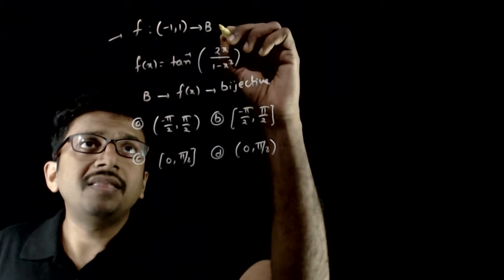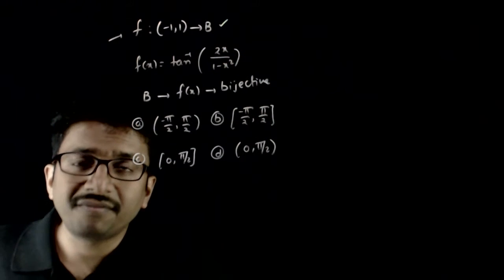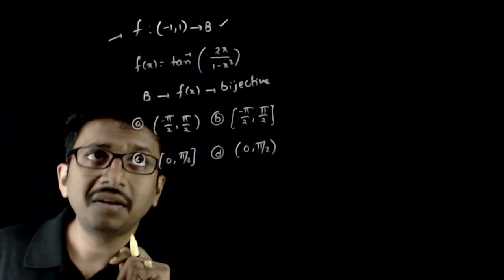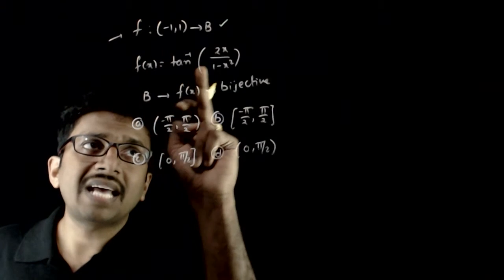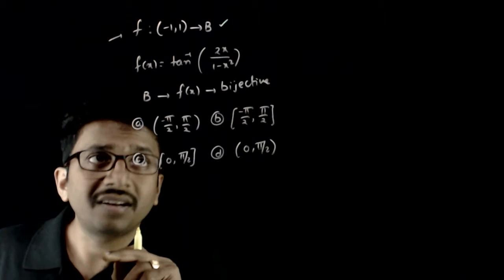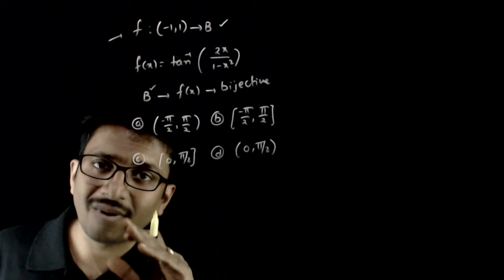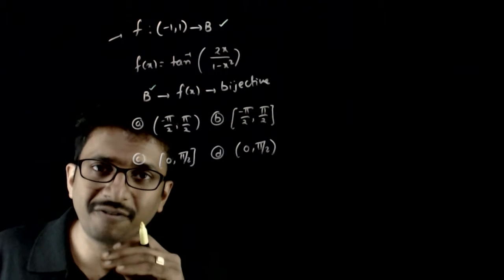Welcome students. In this question you have given that f is a function defined from minus 1 to 1 open to a set B, and f of x is defined as tan inverse of 2x by 1 minus x square. What should be the set B so that f of x is one-to-one as well as onto? This f of x is a bijection.